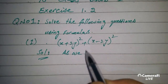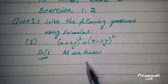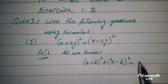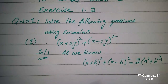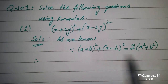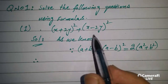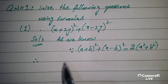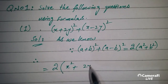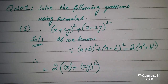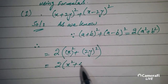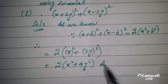As we know, (a+b)² + (a-b)² equals 2 times (a²+b²). Since this question equals this form, we can apply the formula: 2 times the square of the first term plus the square of the second term, giving us x² + 4y². And this is the answer.